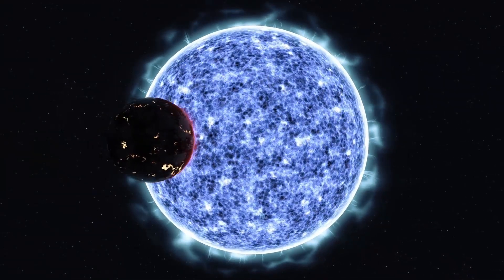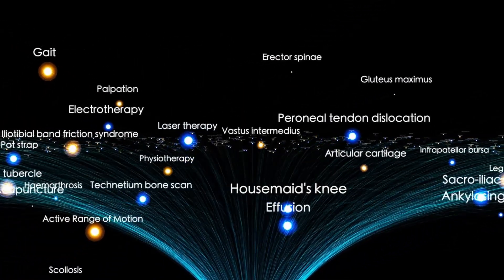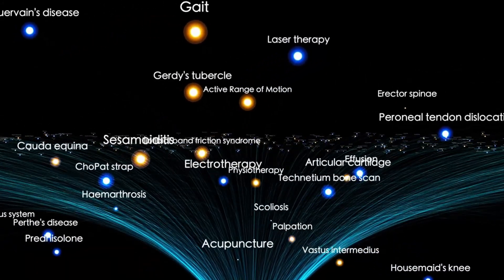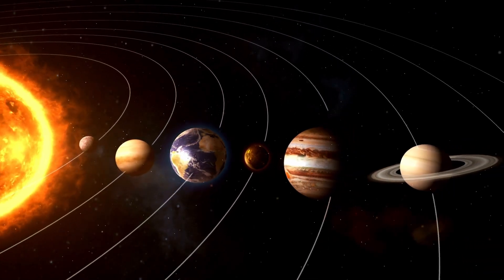Spectral data revealed something astonishing. 3I Atlas was rich in carbon dioxide, CO2, far richer than water. In fact, it has one of the highest CO2 to H2O ratios of any known comet, interstellar or otherwise. That alone raised eyebrows.